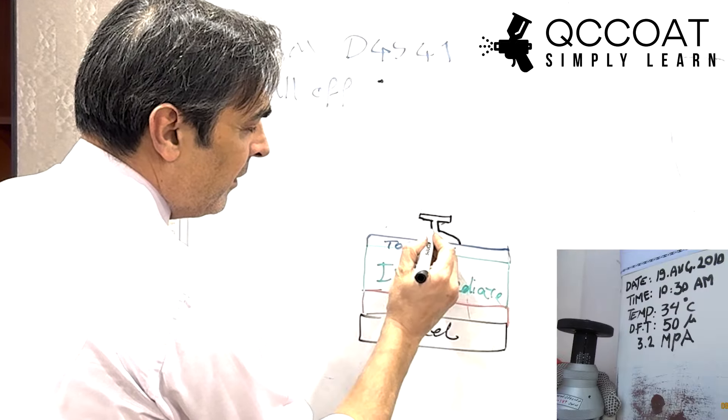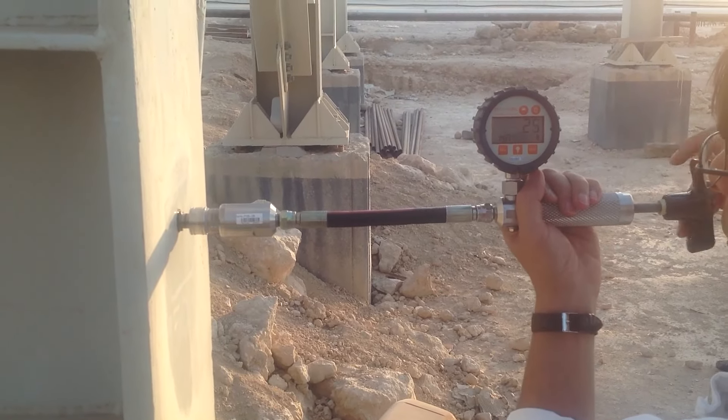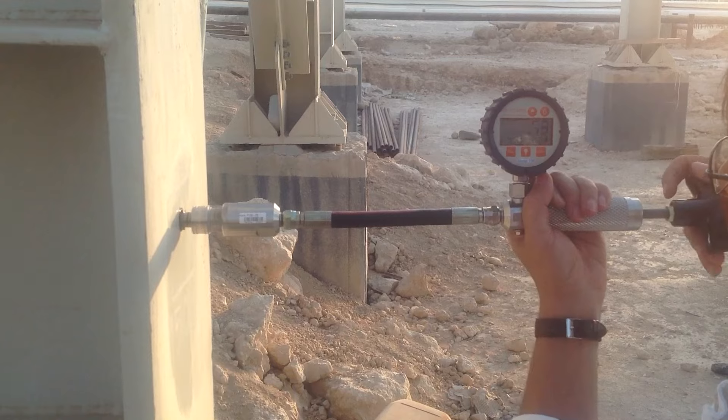What is paint adhesion? Paint adhesion refers to the ability of a paint or coating to bond firmly to the surface it is applied to.